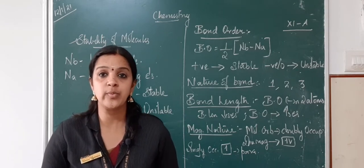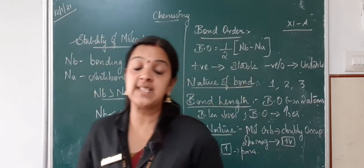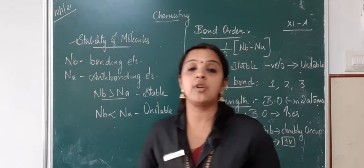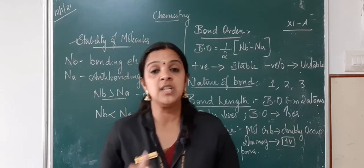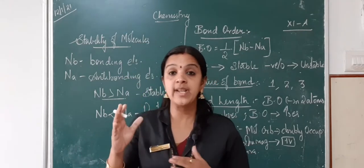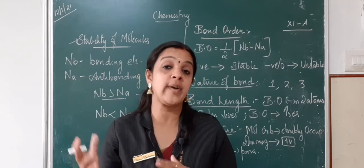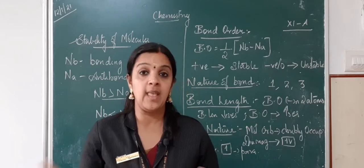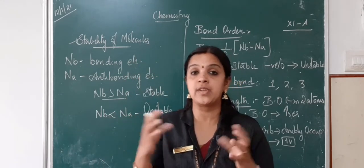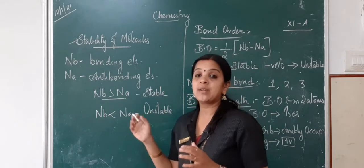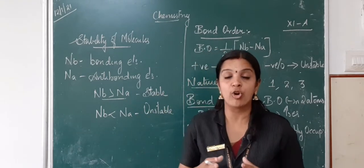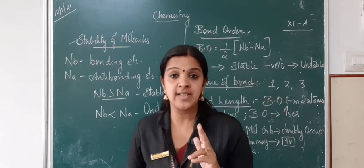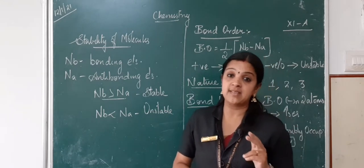Today we are going to start with stability of molecules in Molecular Orbital Theory. In molecular orbital theory there are two types of bonding taking place. One is bonding, where the stability and energy required will be different. And you have anti-bonding, where again there is a slight variation in the energy difference of the molecules.